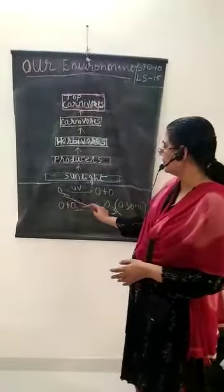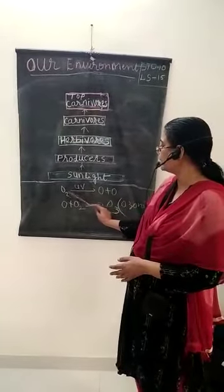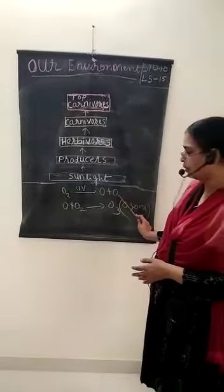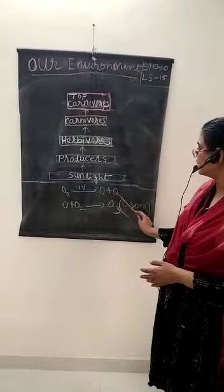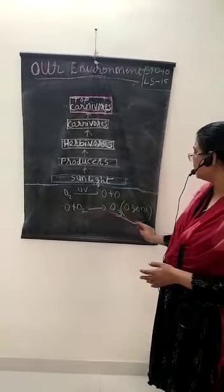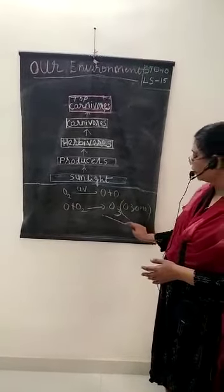Now, oxygen in ultraviolet radiation can split into O plus O - it can split into two atoms of oxygen. And it combines with another oxygen atom to form O3, which is called ozone.